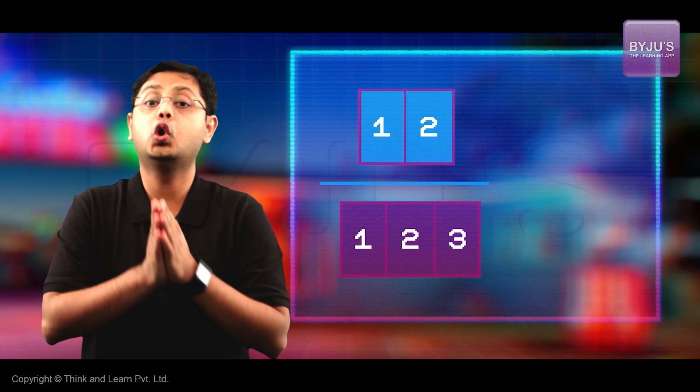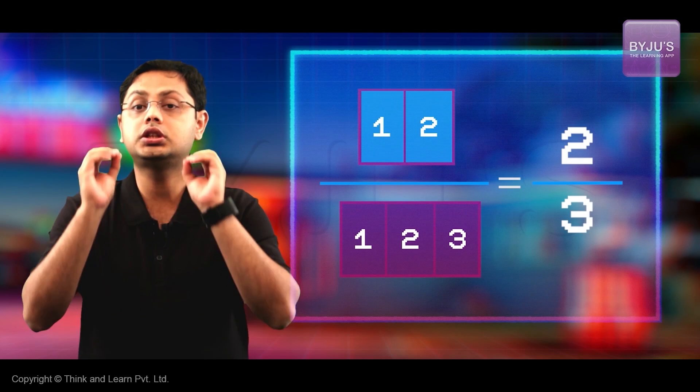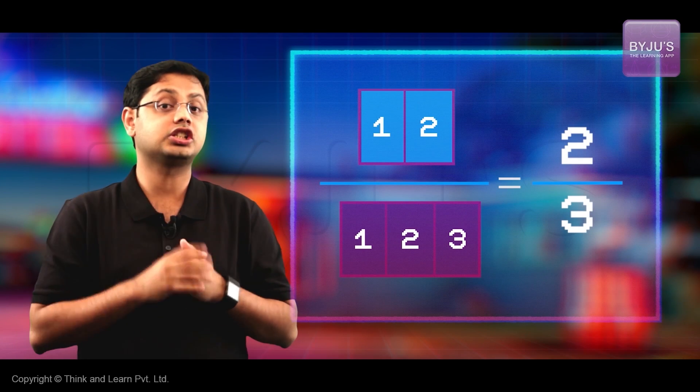Let's try a few more examples to clear this. This rectangle is divided into three equal parts and two of them are shaded blue. So, two over three or two thirds of the rectangle is shaded blue.